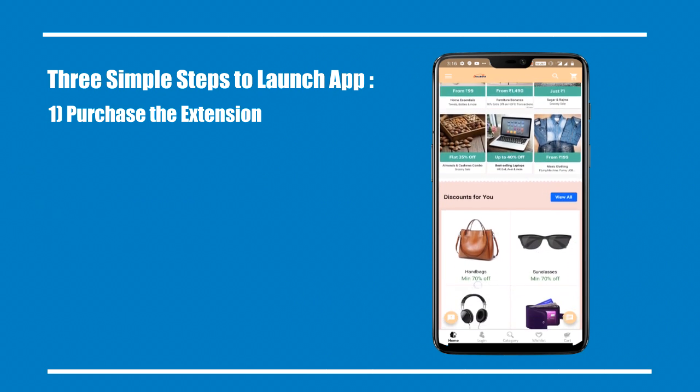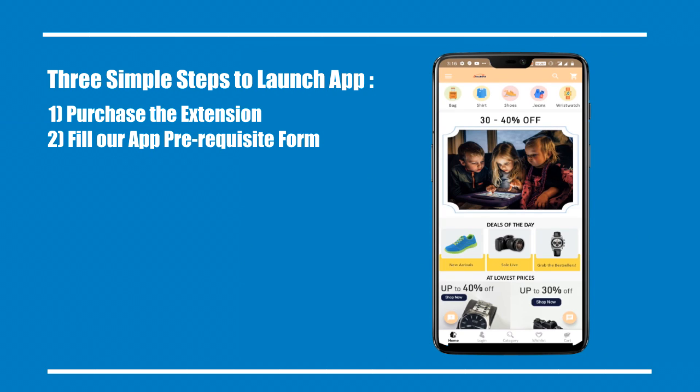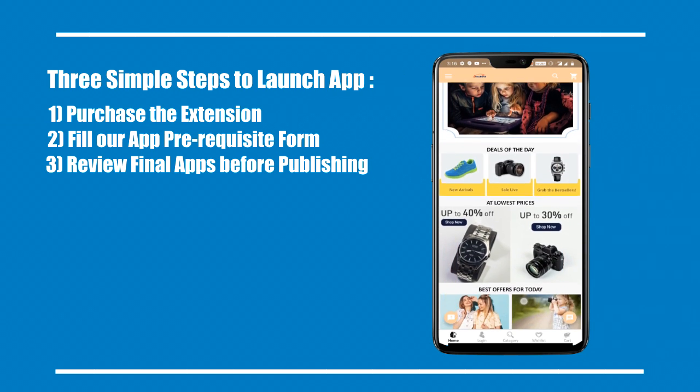Step one: purchase the extension. Step two: fill out our app prerequisite form. Step three: review the final apps before publishing.